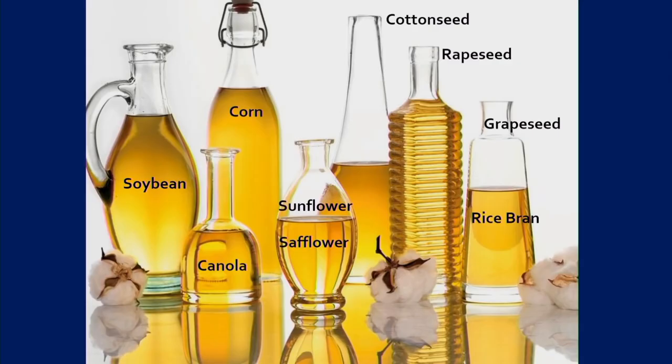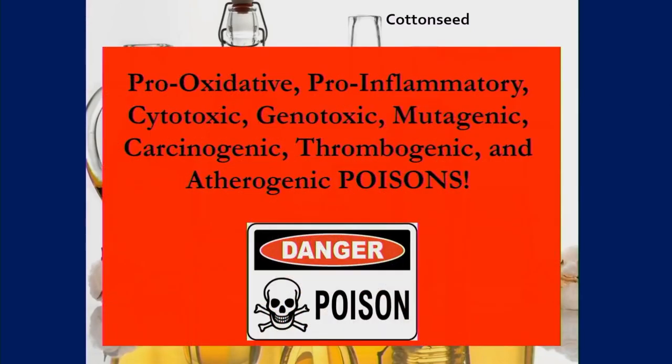Our published data on vegetable oil and saturated fat versus heart disease deaths shows a remarkable correlation between vegetable oils and heart disease deaths, and virtually no correlation between saturated fat and heart disease deaths. Here are all the high-PUFA oils — but they are pro-oxidative, pro-inflammatory, cytotoxic, genotoxic, mutagenic, carcinogenic, thrombogenic, and atherogenic poisons. That's what they are.